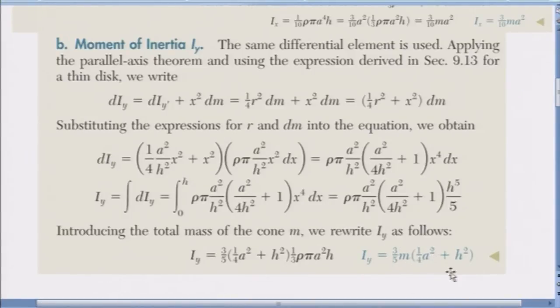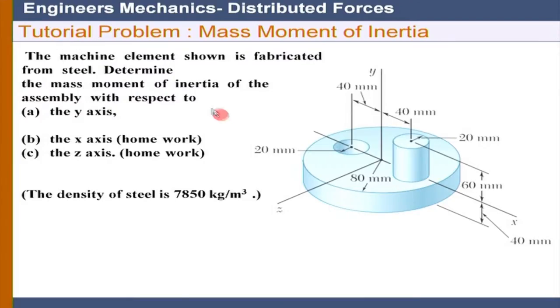So let us move on to the next problem - just a quick problem we are going to do. For this assembly, we have to find out the mass moment of inertia about the y axis. Now that is the easiest part, actually, about the y axis when the body is rotating. So we will try to quickly find out the y axis, and then other two I will post the solution so please look at it.